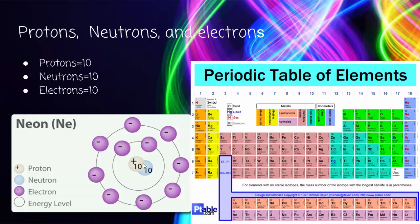Electrons are 10 as well. Electrons are these purple things that surround NEON, and they're housed on things called energy levels, as explained in the last slide.